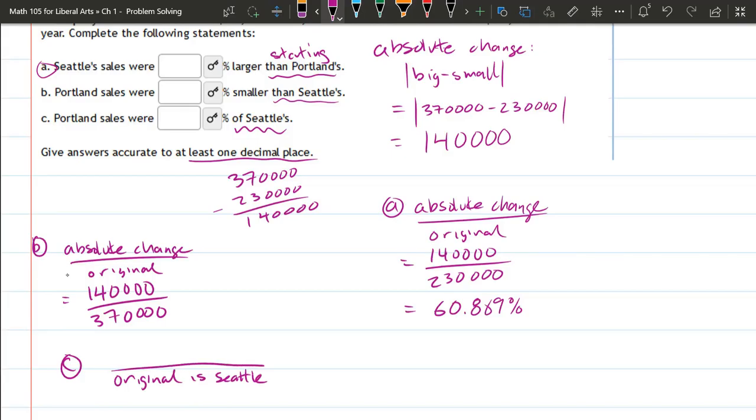And the new one, the one we want to compare to the original, is Portland. And so Portland was 230, 37. All right, you can definitely type this into a calculator.